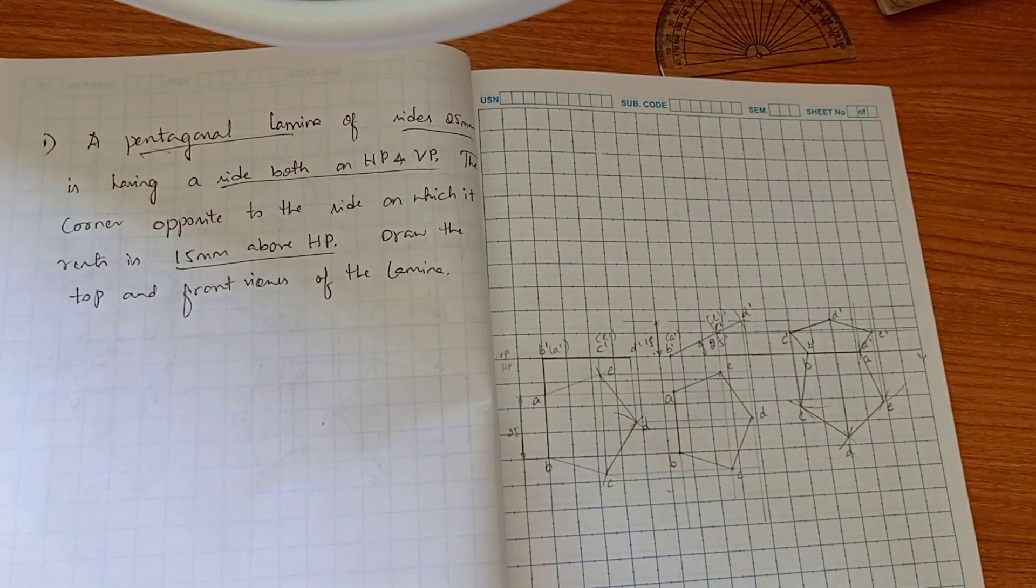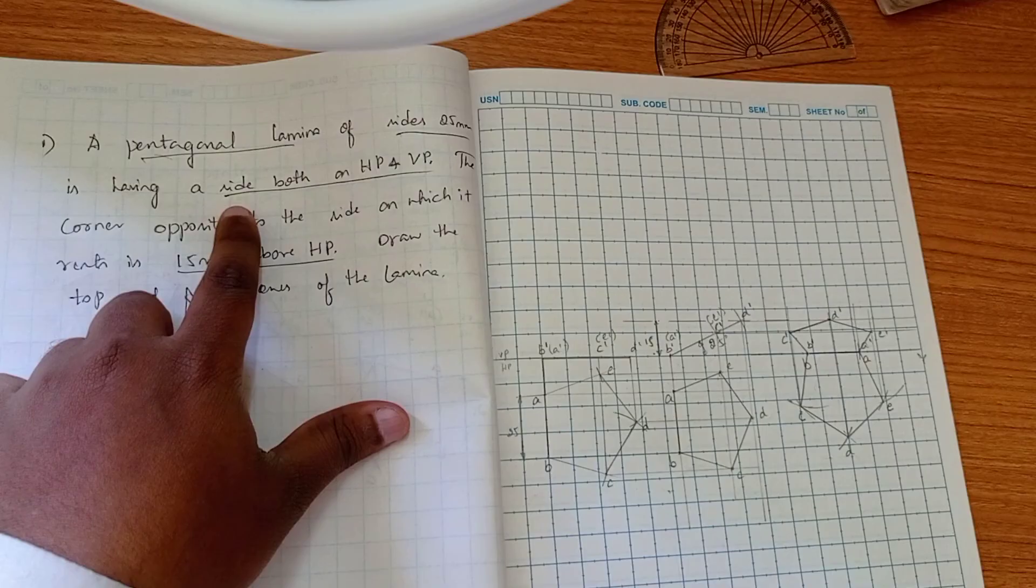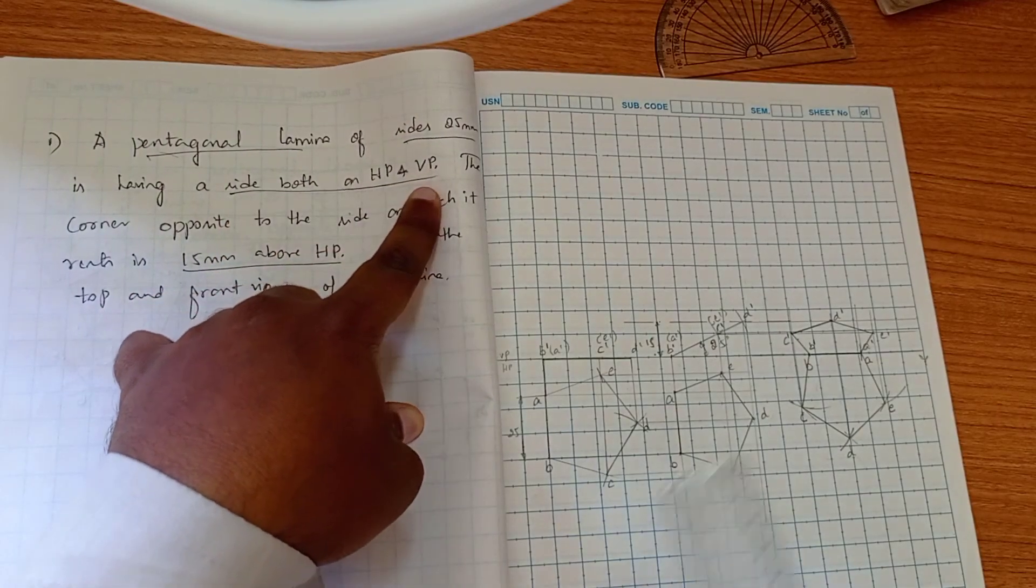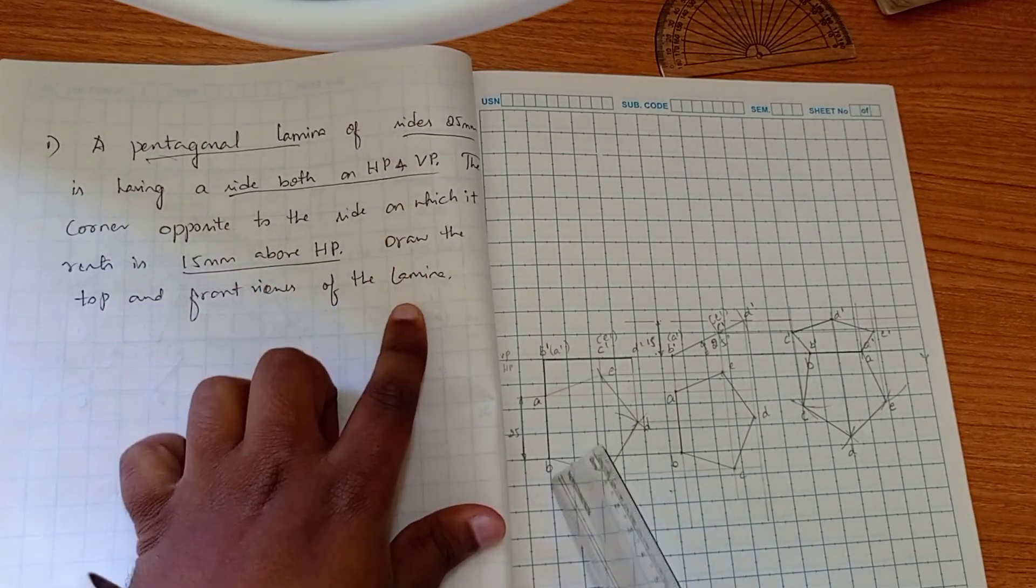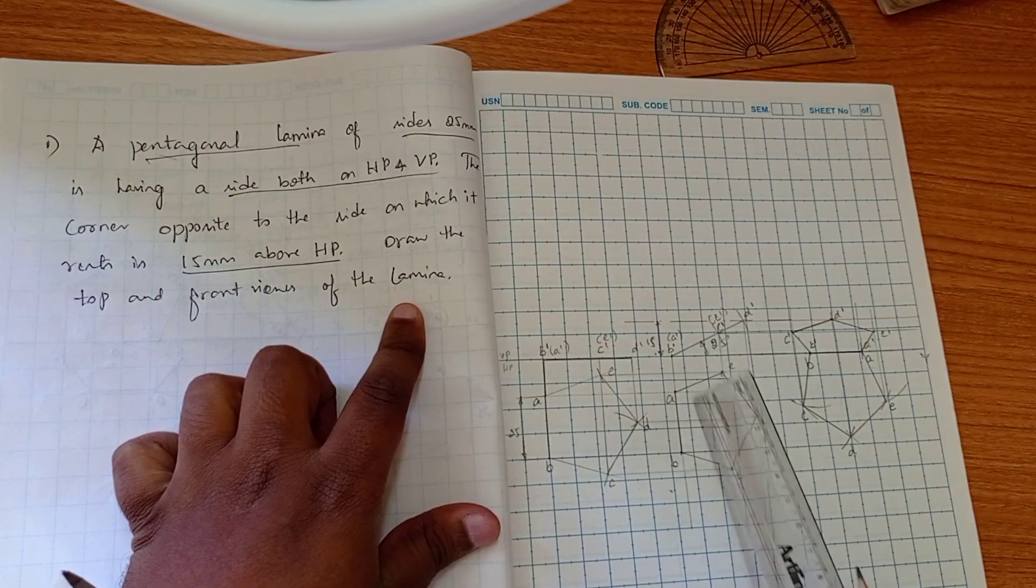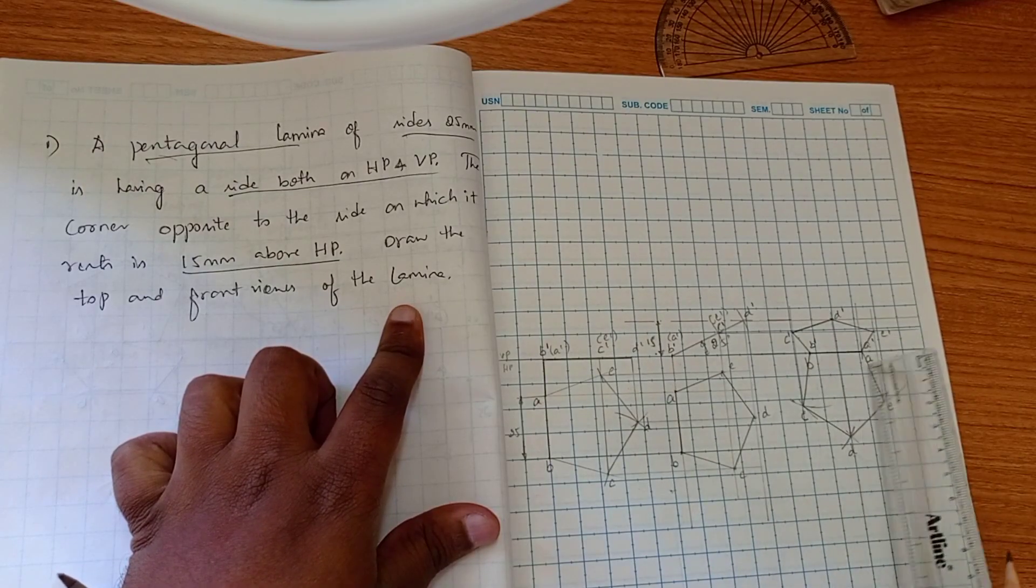So this is how we complete the problem. You can see that we have to make sure the side is both on HP and VP, meaning the side is there in the HP plane, and now we are making it touch the VP plane.